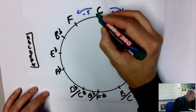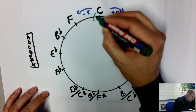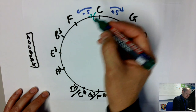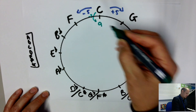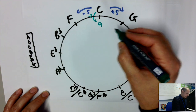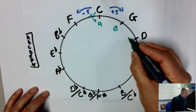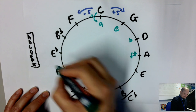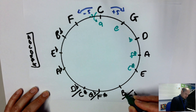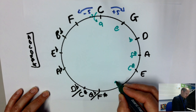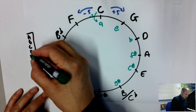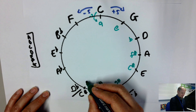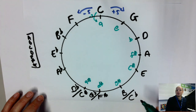Going down three from each major gives us the relative minor. From C: C, B, A minor. From G: G, F, E minor. Then D minor, C minor, B minor, A minor, G sharp minor, F sharp minor, C sharp minor, and so on going around the sharp side. The relative minor shares the same key signature as its major.